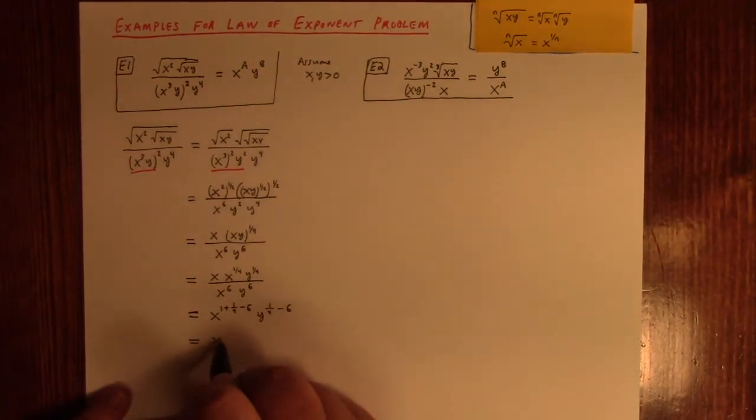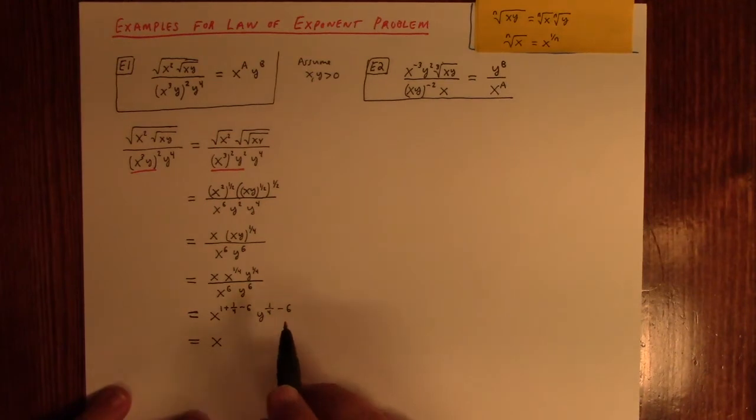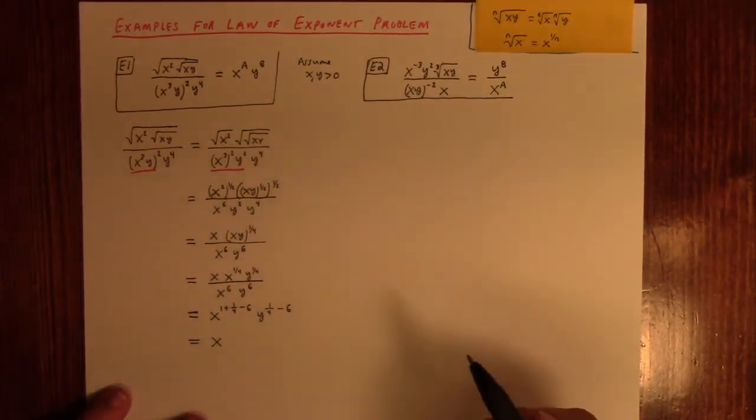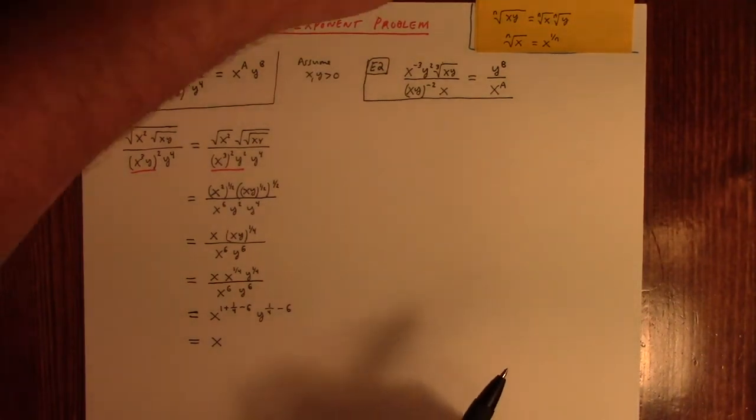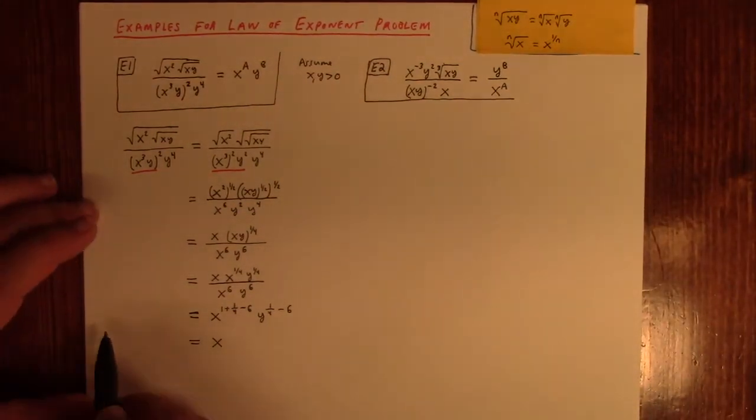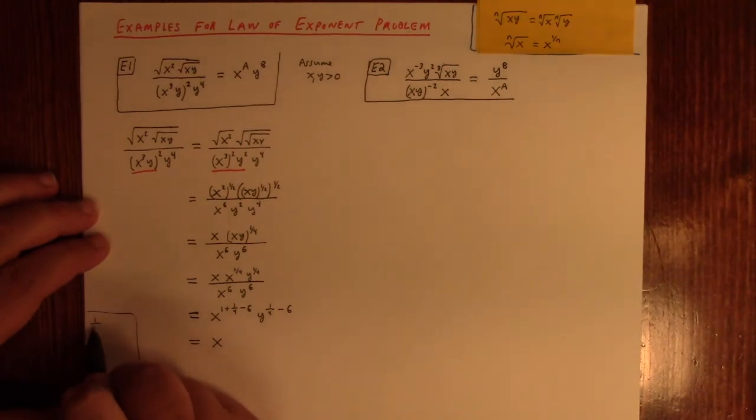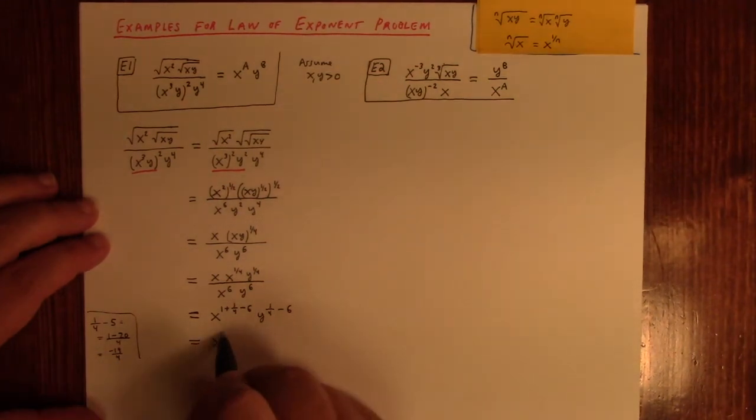And so what does that give me? That gives me x to the, let's see here. 1 fourth, 1 minus 6 is minus 5. What's 1 fourth minus 5? So, let's see here. I usually like to write it on some scratch paper. And I don't want to clutter my current presentation. So, I'll just do it over in the side here. 1 fourth minus 5. Right? That's what this is. That is the same as 1 minus 20. Let's see here. 5 times 4 over 4 is 20 over 4. So, I think, if I haven't made a mistake here, that's minus 19 over 4. So, I've got minus 19 over 4.